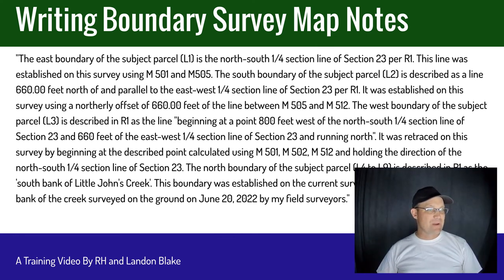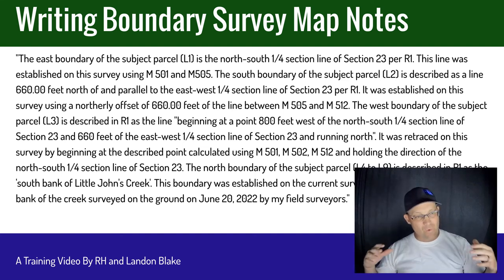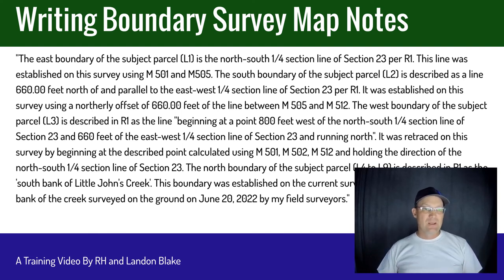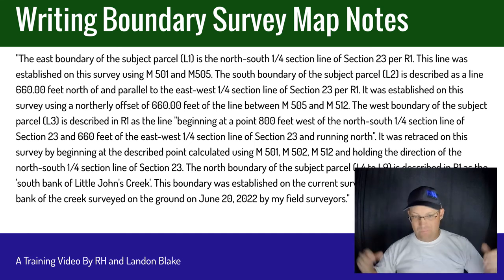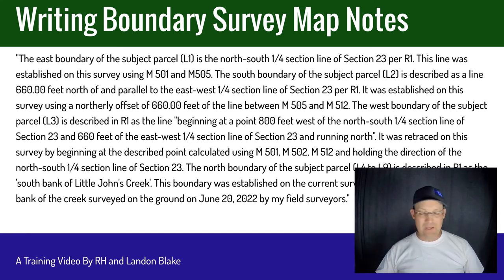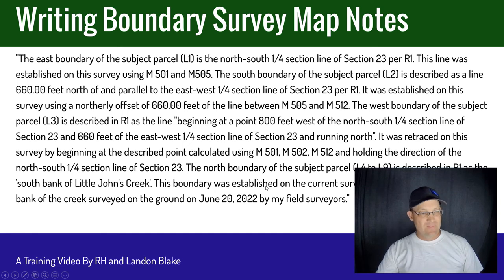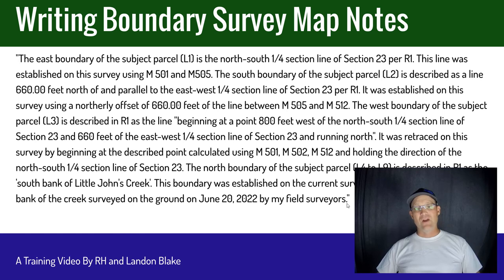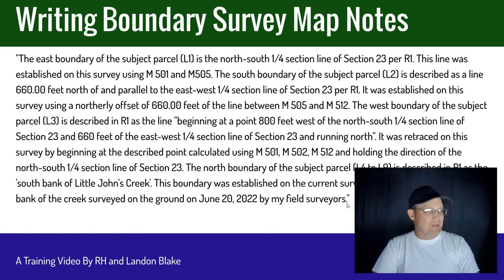The north boundary of the subject parcel, L4 to L9 — so now I have a logical grouping of segments — is described in R1 as the south bank of Little John's Creek. I tell you how it's described and the source document R1. The boundary was retraced on the current survey using the top south bank of the creek surveyed on the ground on June 20, 2022 by my field surveyors. In this case we actually have multiple measurements of the south bank of the creek directly tying back to physical evidence on the ground.